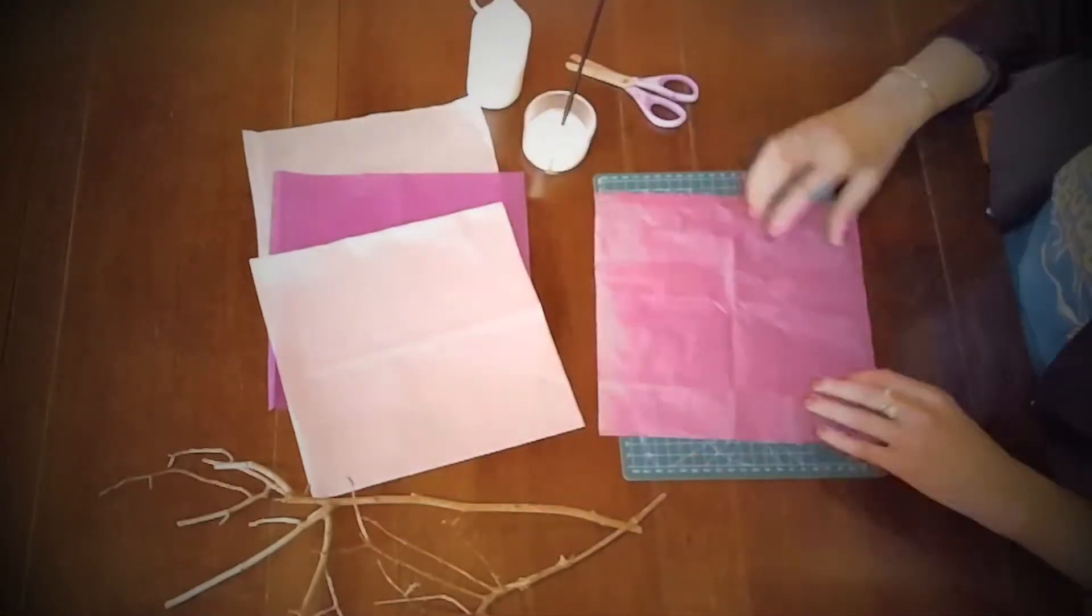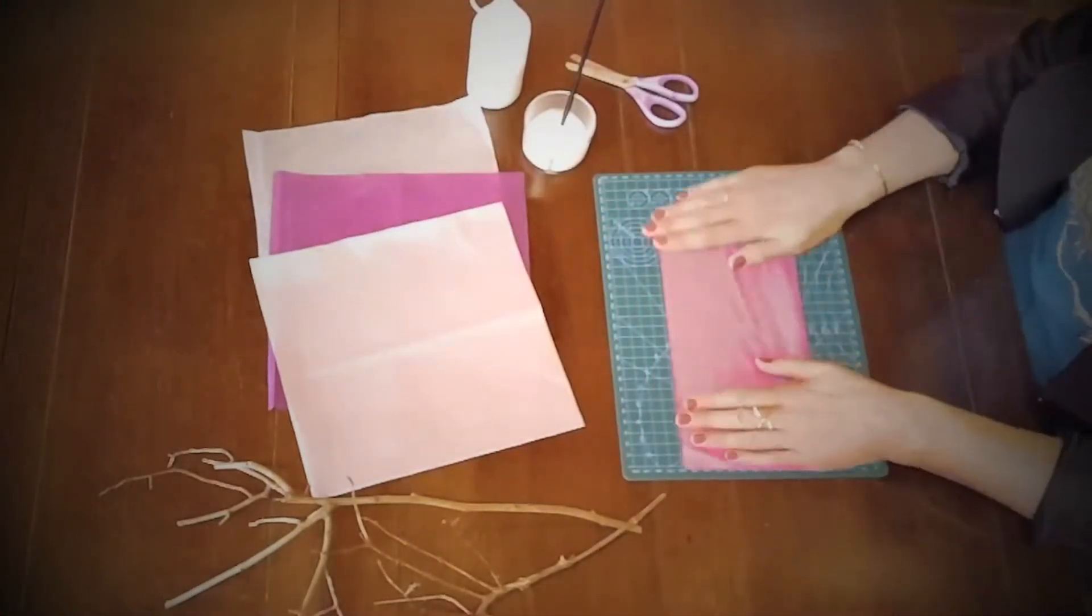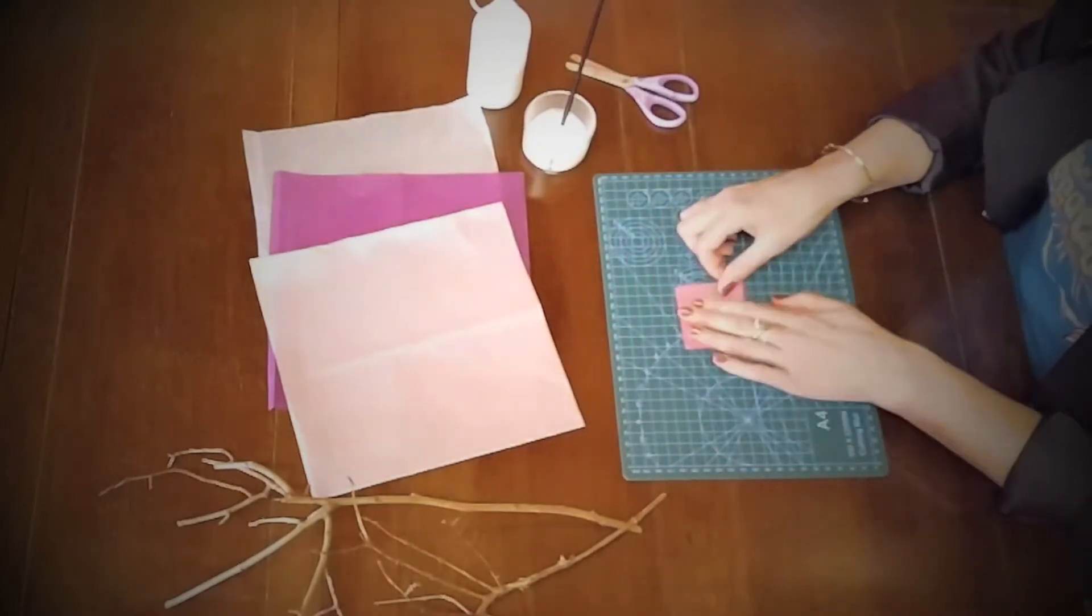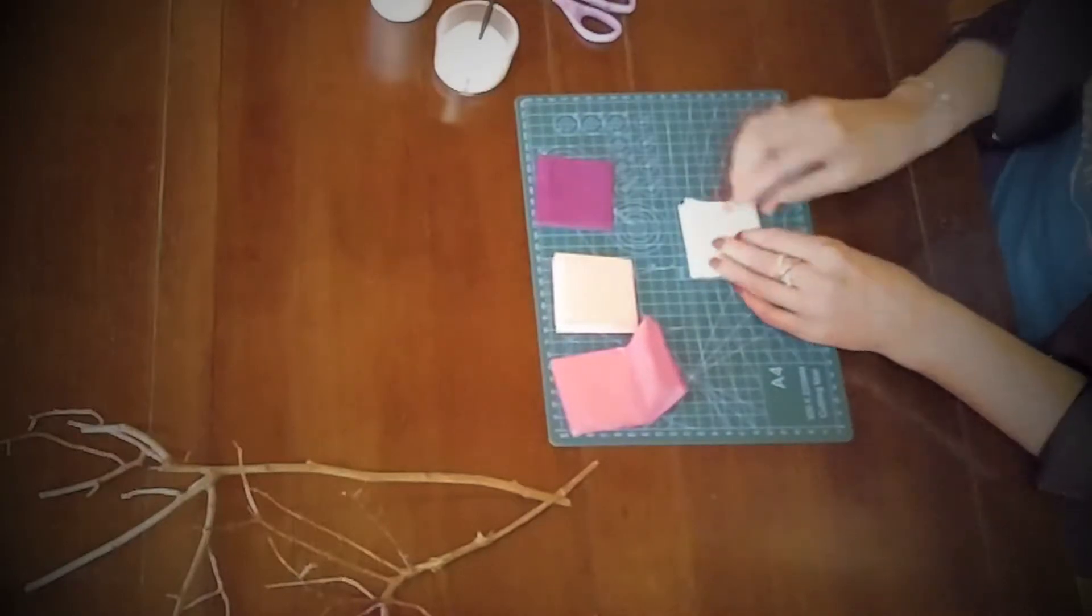Select what colour tissue paper you wish to use for your flowers. Two to four different colours work best. Fold each piece of tissue paper into a small square about six centimetres by six.